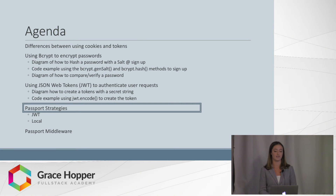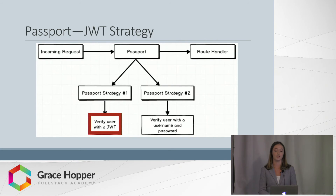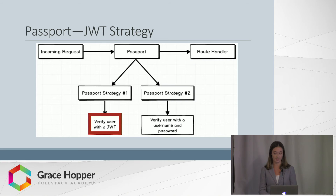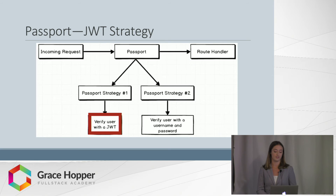Now let's take a look at the two passport strategies that employ bcrypt and JWT libraries. Passport is a library that determines whether a request for an authenticated route is coming from a user who is authenticated. Authentication can be determined by a range of strategies, like JWT, shown as the first, or with an email-password local strategy, shown as the second.